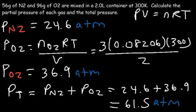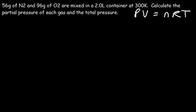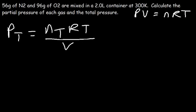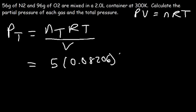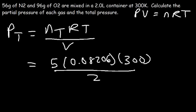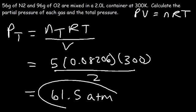You can also calculate the total pressure directly using the ideal gas law with total moles. Total pressure equals total moles times R times T divided by V. We have 3 moles of oxygen plus 2 moles of nitrogen, giving 5 total moles, times the gas constant times 300 Kelvin divided by 2 liters. This also gives 61.5 atm — the same answer.